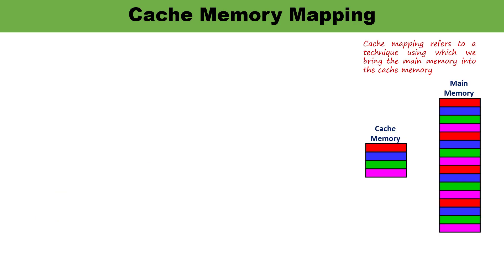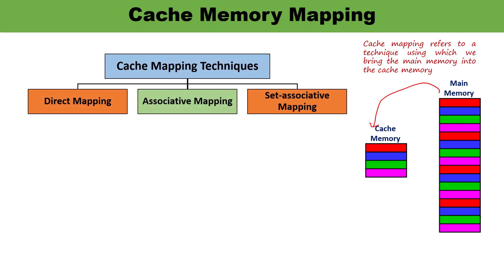As I have told you, cache mapping is a technique via which we can bring the content or block of main memory into the cache memory. The size of cache memory is smaller than main memory, and the CPU searches and takes data from the cache memory itself. There are three techniques via which cache mapping can happen: direct mapping, associative mapping, and set associative mapping.